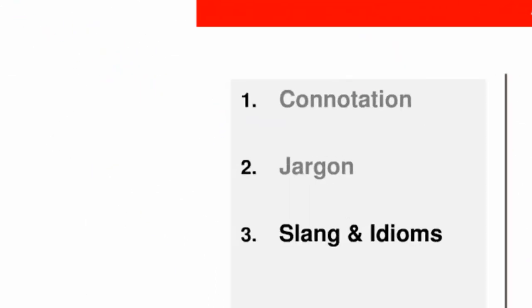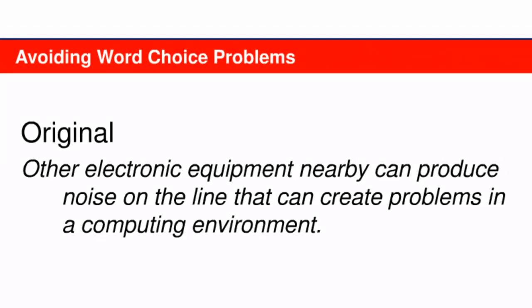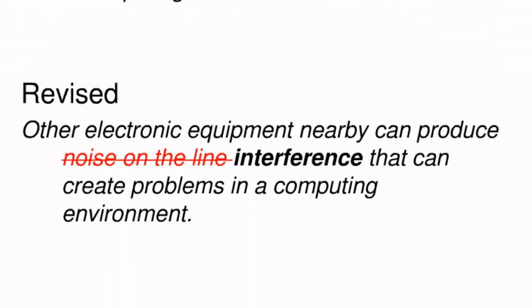The third source of word choice problems is either slang or idioms. The original sentence contains an idiom: 'noise on the line.' It's derived from a rather old-fashioned situation in which audio problems occurred on hardwired and shared telephone lines. However, the term is not being used literally in this report because there are not necessarily physical lines connecting the equipment. While most native English speakers might correctly infer the meaning, it's likely to create uncertainty for a few and for many non-native speakers. The revised version is more effective because it replaces the idiom with the word 'interference,' which is accurate for any reader.